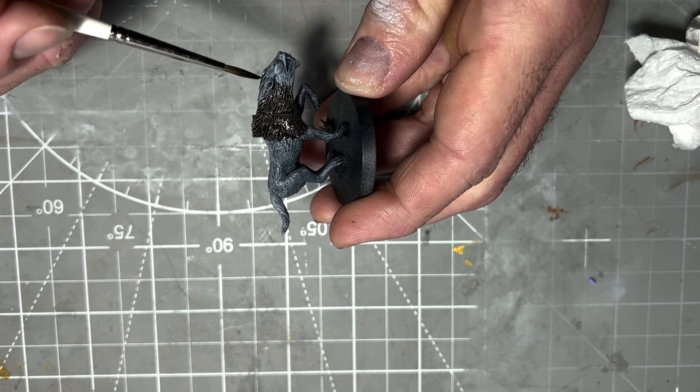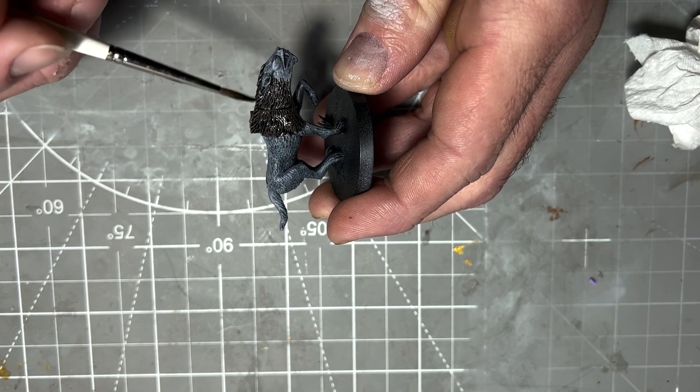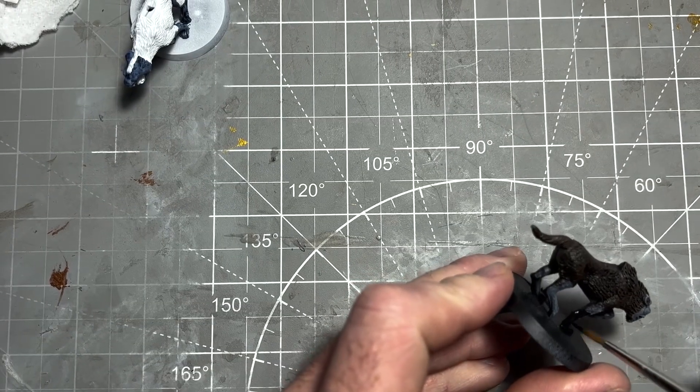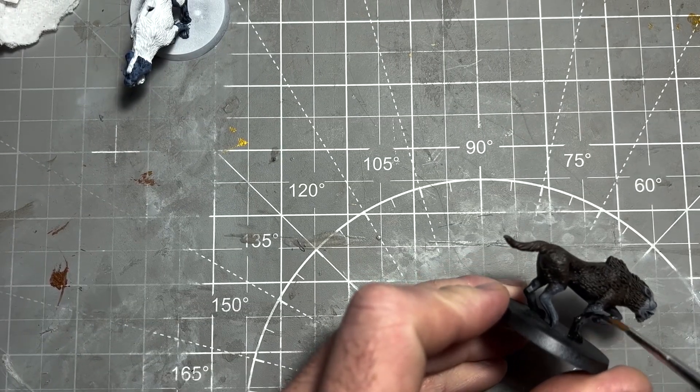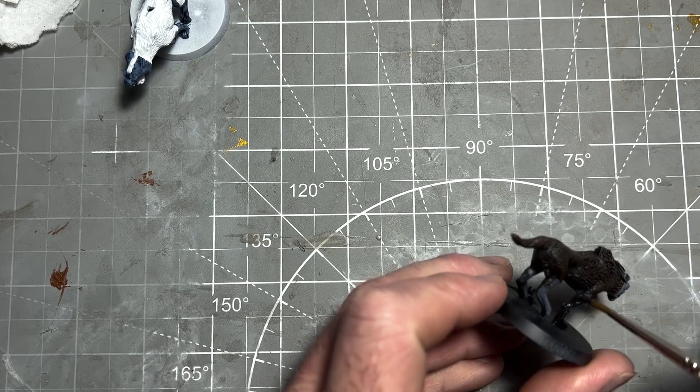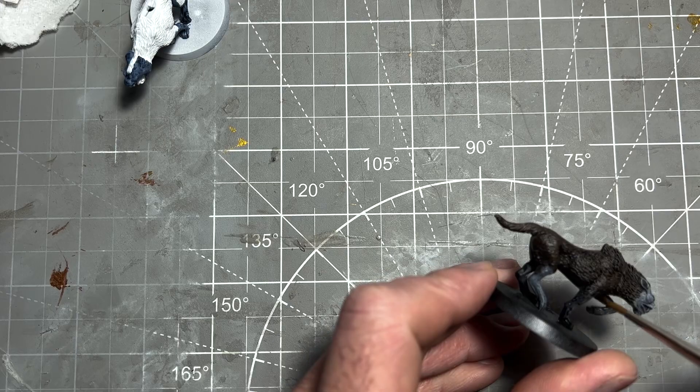For the skin, we're going to use pure Gravelord Grey speed paint over all the areas—the legs, the face—but be very careful not to catch the teeth.